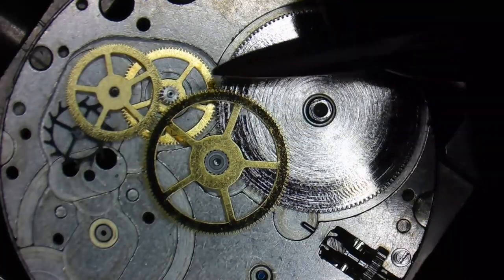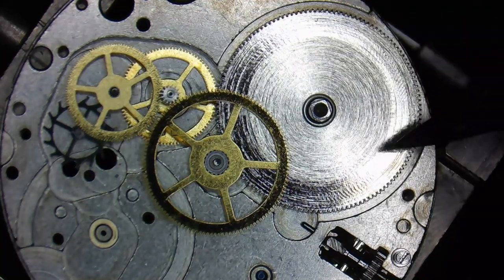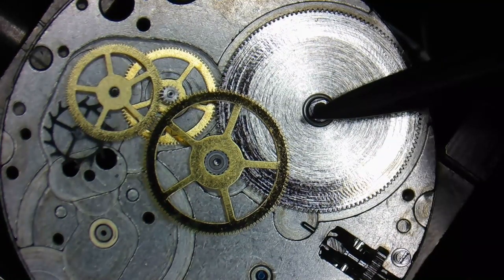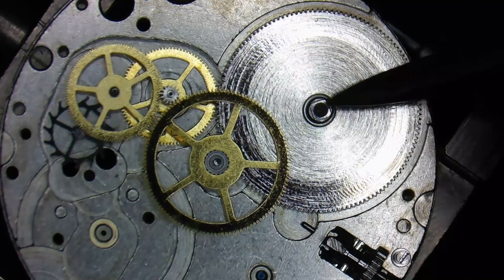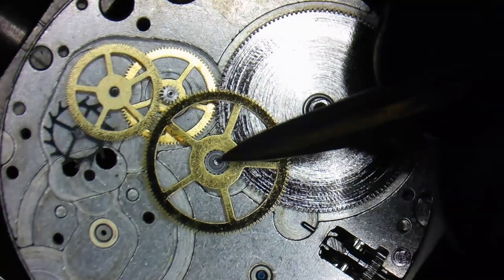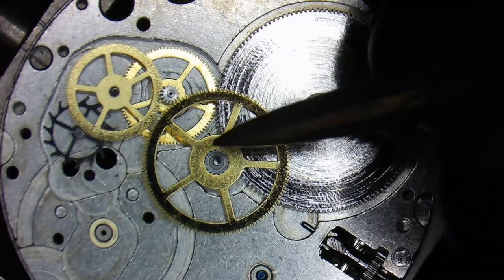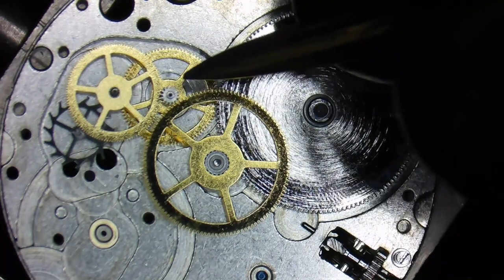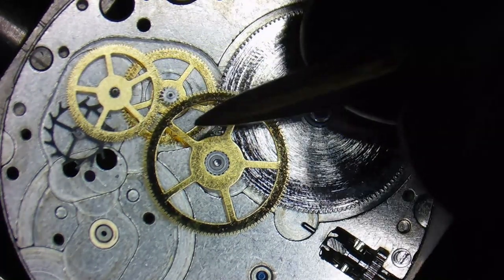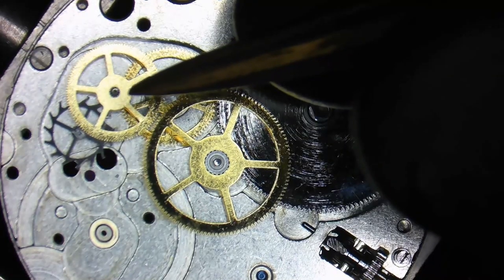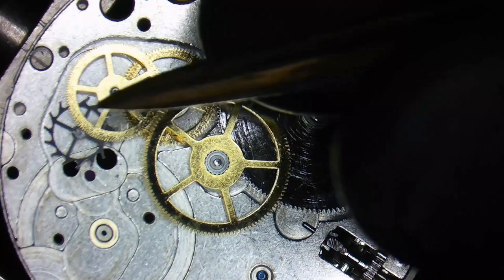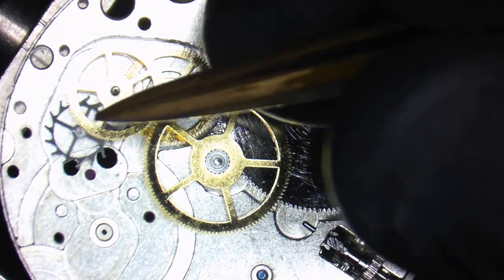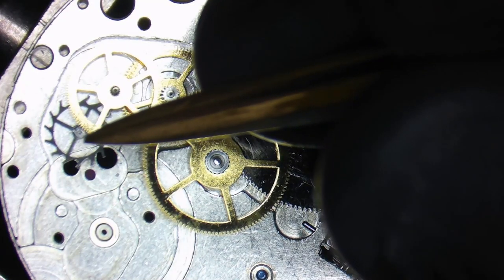Now the gearing ratios are going to be different depending on the beat of the watch. This particular one is 18,000 beats per hour. The mainspring arbor in this watch makes one revolution every eight hours. The arbor of the second wheel makes one rotation every hour. That's why it carries the minute hand. The third wheel makes one rotation approximately every seven and a half minutes. The fourth wheel pivot makes one rotation every 60 seconds. That's why it carries the second hand. And the pivot on the escape wheel makes one rotation every six seconds.